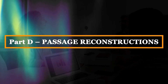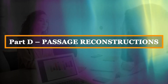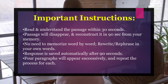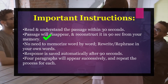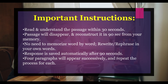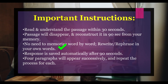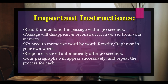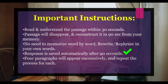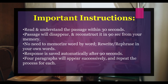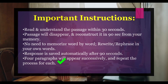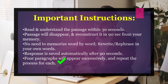Section 4 is Passage Reconstruction. In this section, a passage will appear on your screen and you must read and understand the content within 30 seconds. After 30 seconds, the passage will disappear and a new screen will appear with a box. You will have 90 seconds to retype the entire passage from memory. Your task is to reconstruct the passage in your own words within 90 seconds. You don't need to memorize it word by word. You will get a total of 4 paragraphs, one after the other, and you have to read and reconstruct each of them.